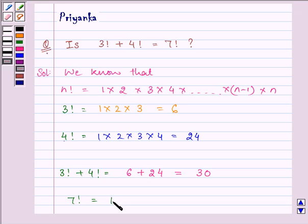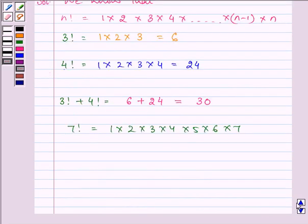7 factorial is multiplying all natural numbers from 1 to 7, and the answer of their multiplication comes out to be 5040.